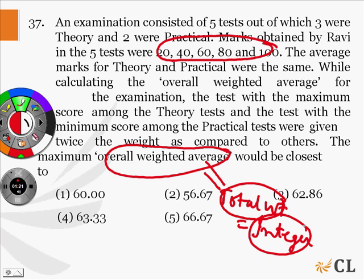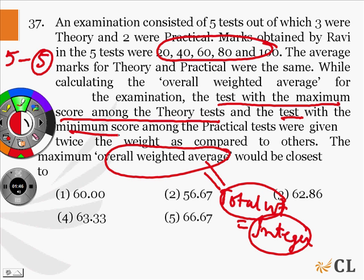Initially, there were 5 tests, so the weight is 5 or the denominator is 5. Now, the test with the maximum score among the theory tests and the test with the minimum score among the practical tests were given twice the weight.